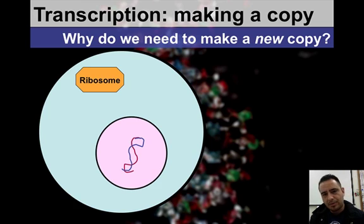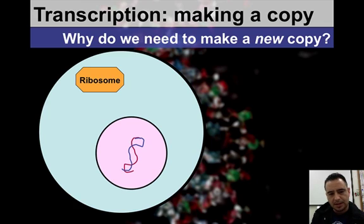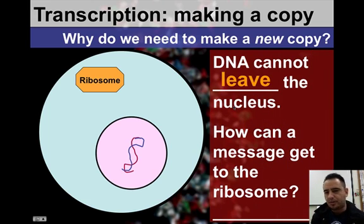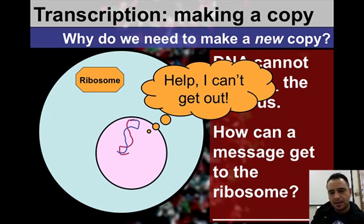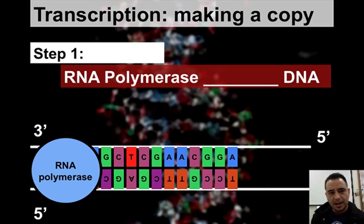So why do we make a new copy? Why don't we just send DNA outside? Well, if DNA goes outside, it's going to run into maybe a lysosome and get destroyed. So DNA cannot leave the nucleus. We have to protect it as much as we can. So how can we get the message to the ribosome? The answer is mRNA. So let's make mRNA — that's how we start transcription.